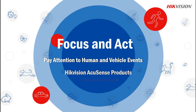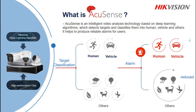AccuSense helps us focus and react on true alarms and reduce the false alarm rate. True alarms are focused on — human triggers and vehicle triggers, as you can see. We focus on those two types of triggers, which in most cases will be your real alarms. You only get alarms on those, which means you focus on them and forget about the false alarms. AccuSense does filtering and classification on human and vehicle targets, and the rest is disregarded. You get basically two types of AccuSense devices: the cameras and the NVRs, and we're going to look at both.